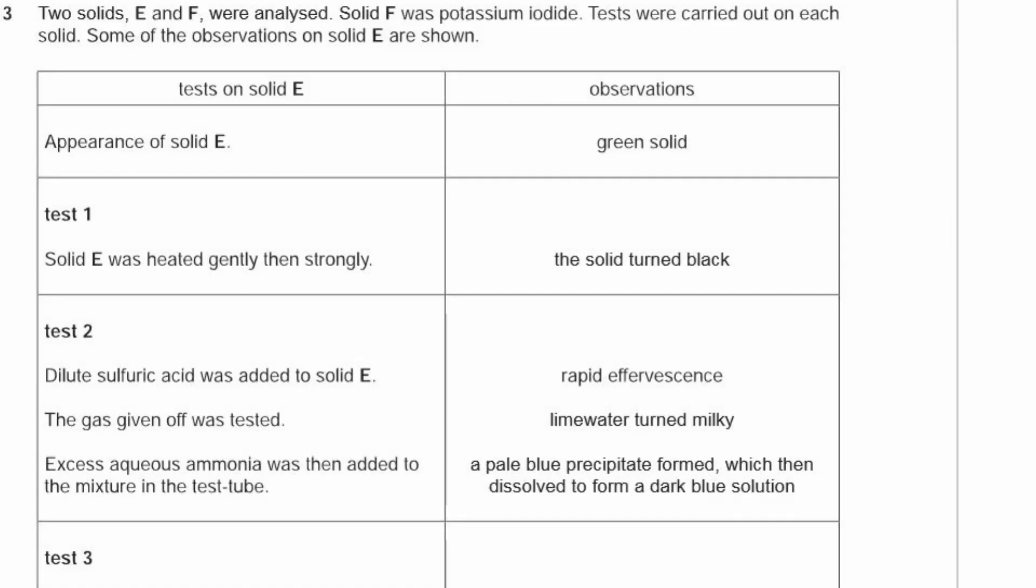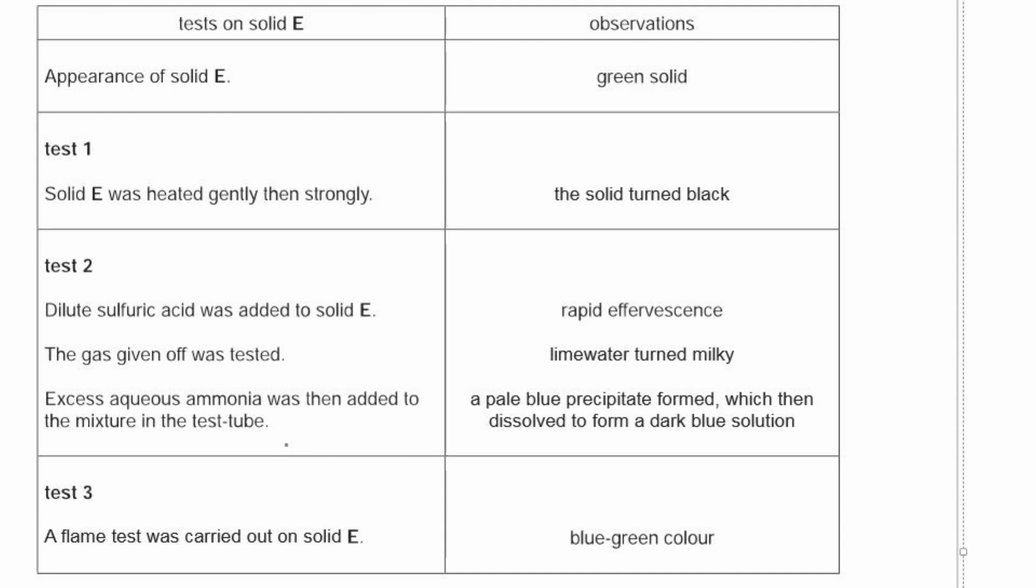Question 3. Two solids E and F were analyzed. Solid F was potassium iodide. Tests were carried out on each solid. First, solid E is a green solid. Test 1: solid E was heated gently and then strongly, and the solid turned black. Test 2: dilute sulfuric acid was added to solid E, and it had rapid effervescence. Notice it didn't say a gas was given off, they said effervescence or bubbles. The gas given off was tested, and the observation was that lime water turned milky.